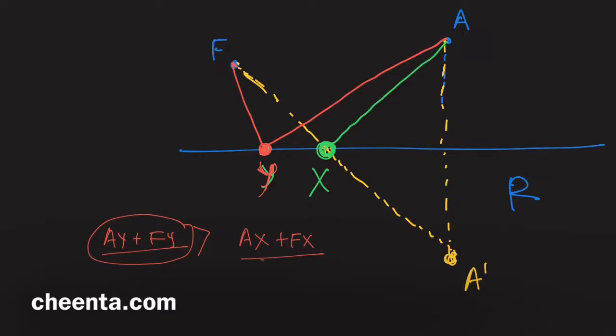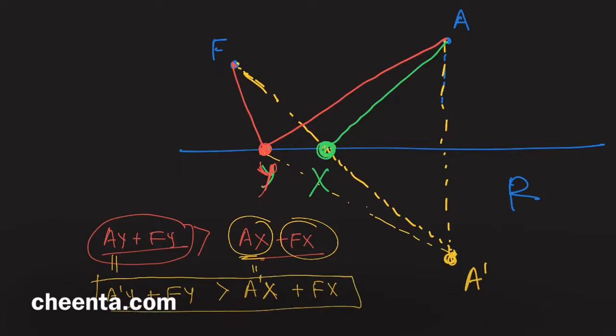So how do we show this? We can join Y A prime, it's just a construction. So notice that A Y plus F Y, A Y is equal to A prime Y, and F Y is F Y. We want to show that is greater than A X plus F X. But A X is A prime X. A X is same as A prime X because this is just a reflection.